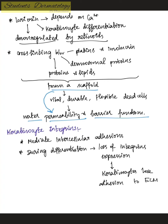Keratinocyte integrins form bidirectional communication and mediate intercellular adhesions. During differentiation, there is loss of integrin expression, which allows keratinocytes to lose adhesion to the extracellular matrix and facilitates their differentiation.